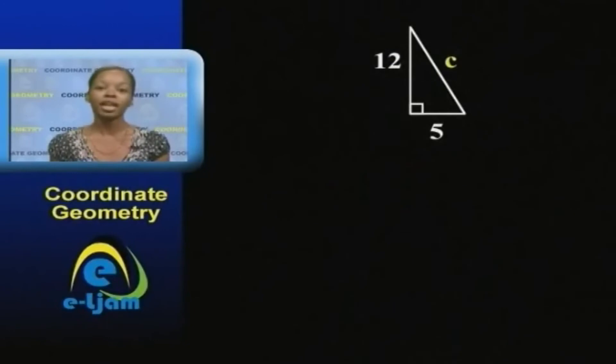But suppose we don't know what the length of the hypotenuse is. If the other two sides have lengths 5 and 12, we know we can square them and add them to get the hypotenuse squared.